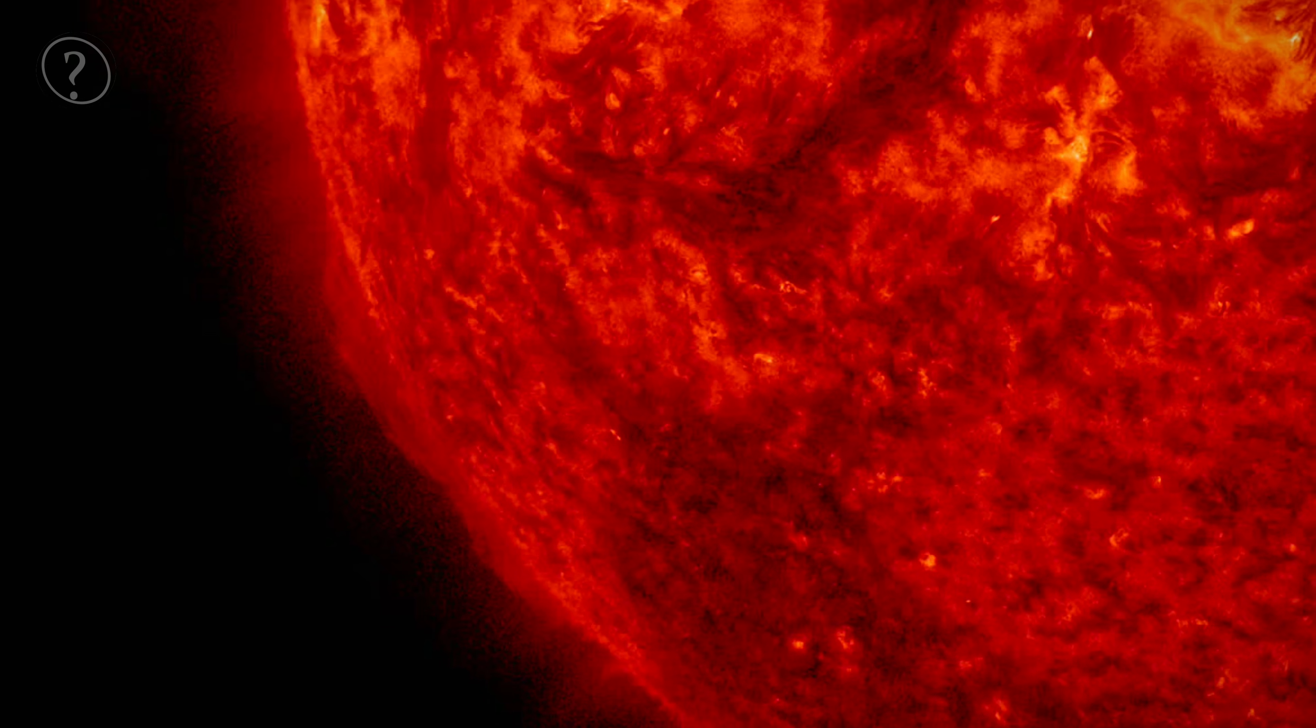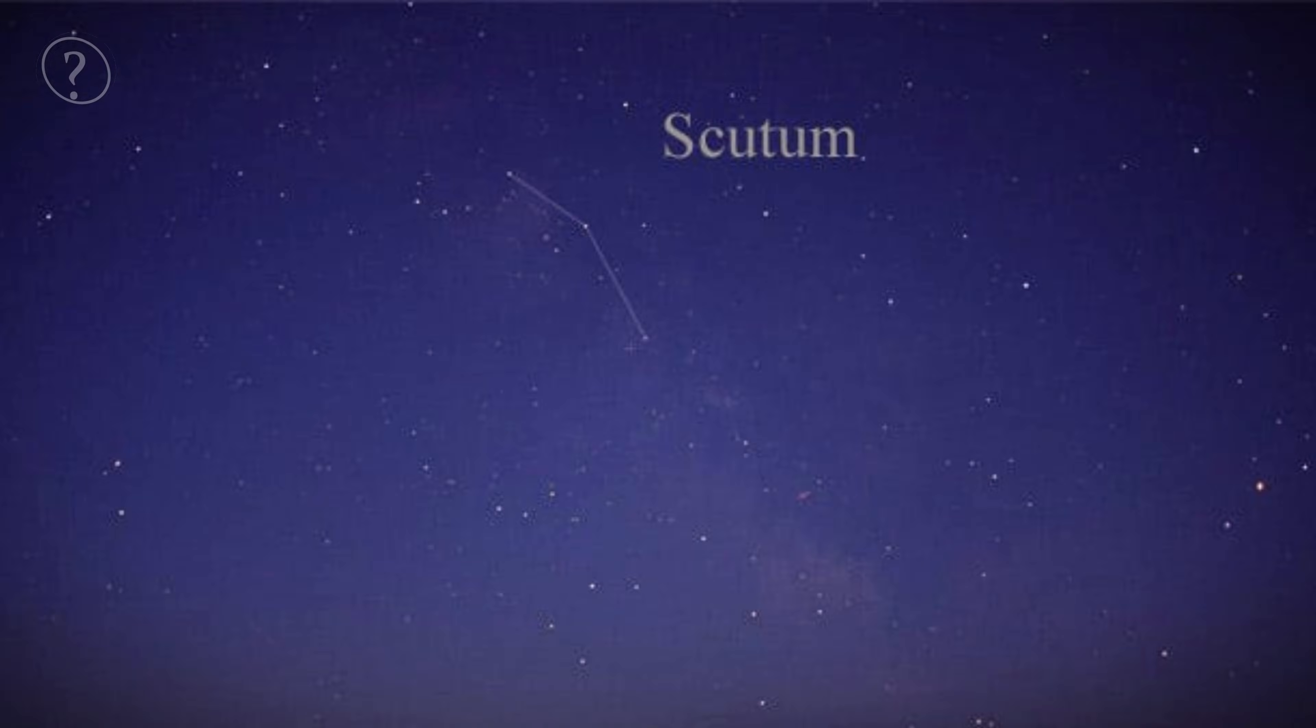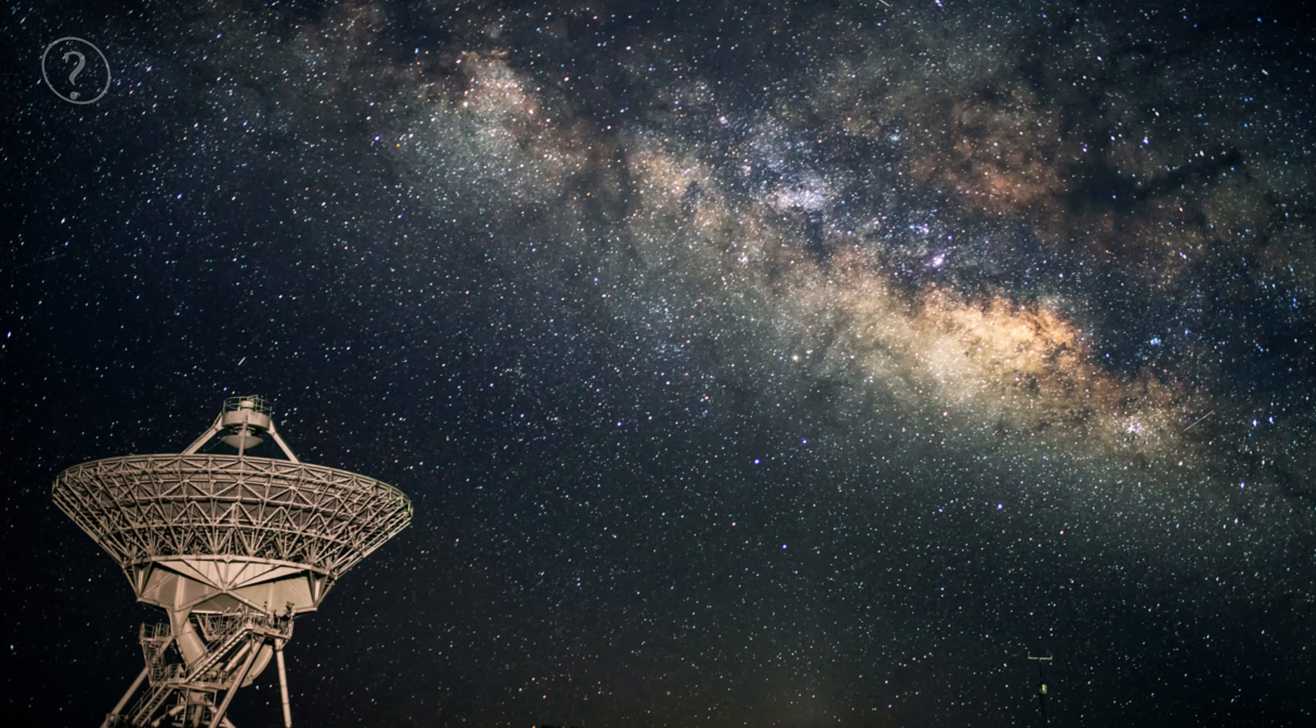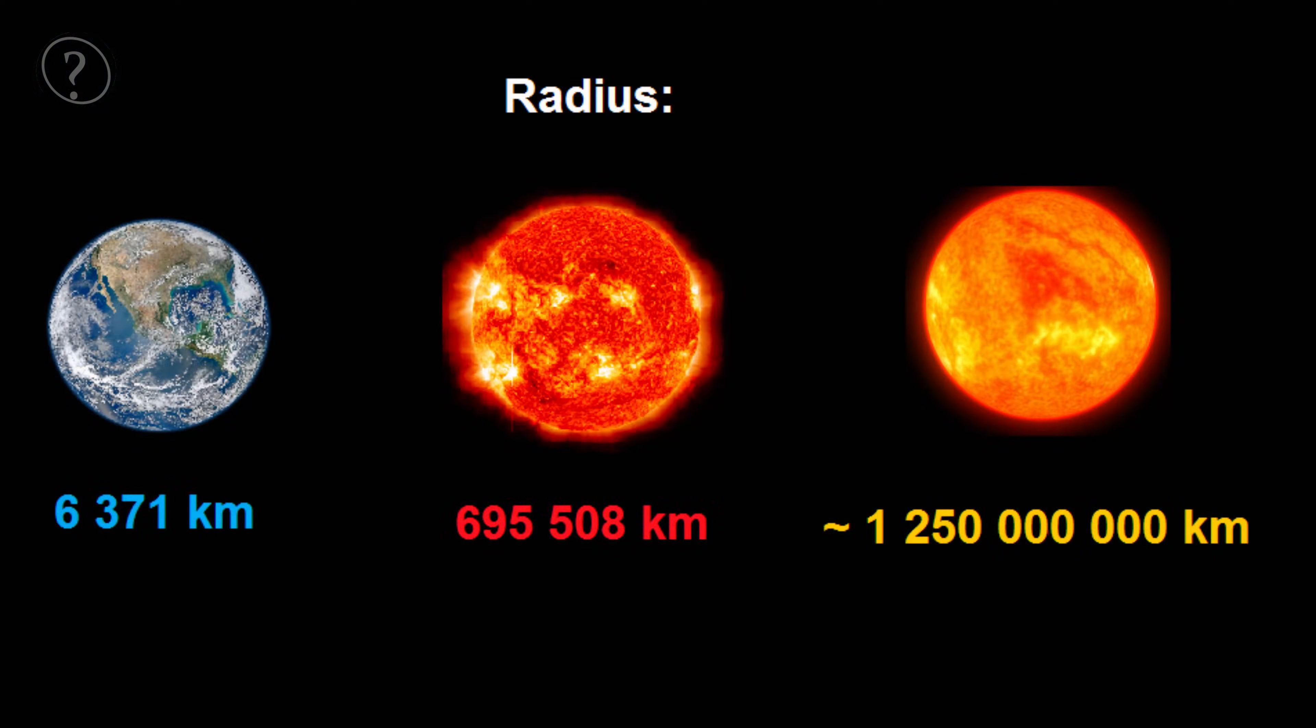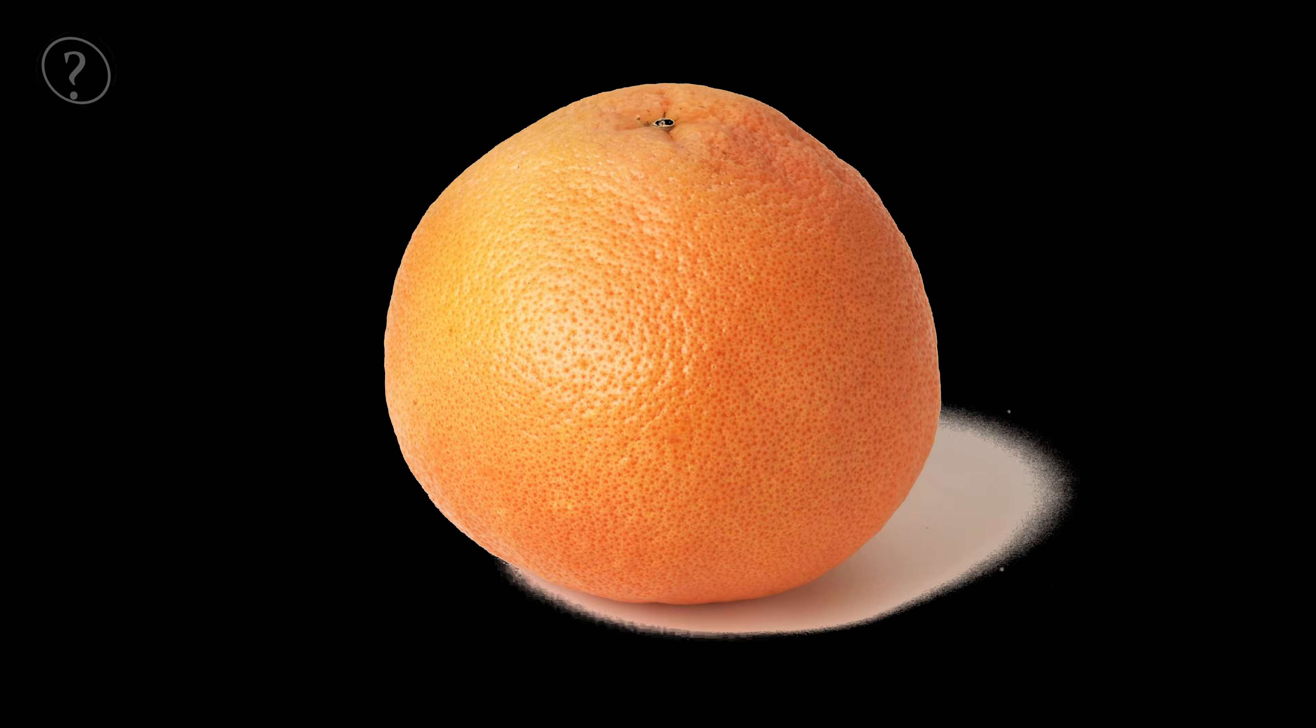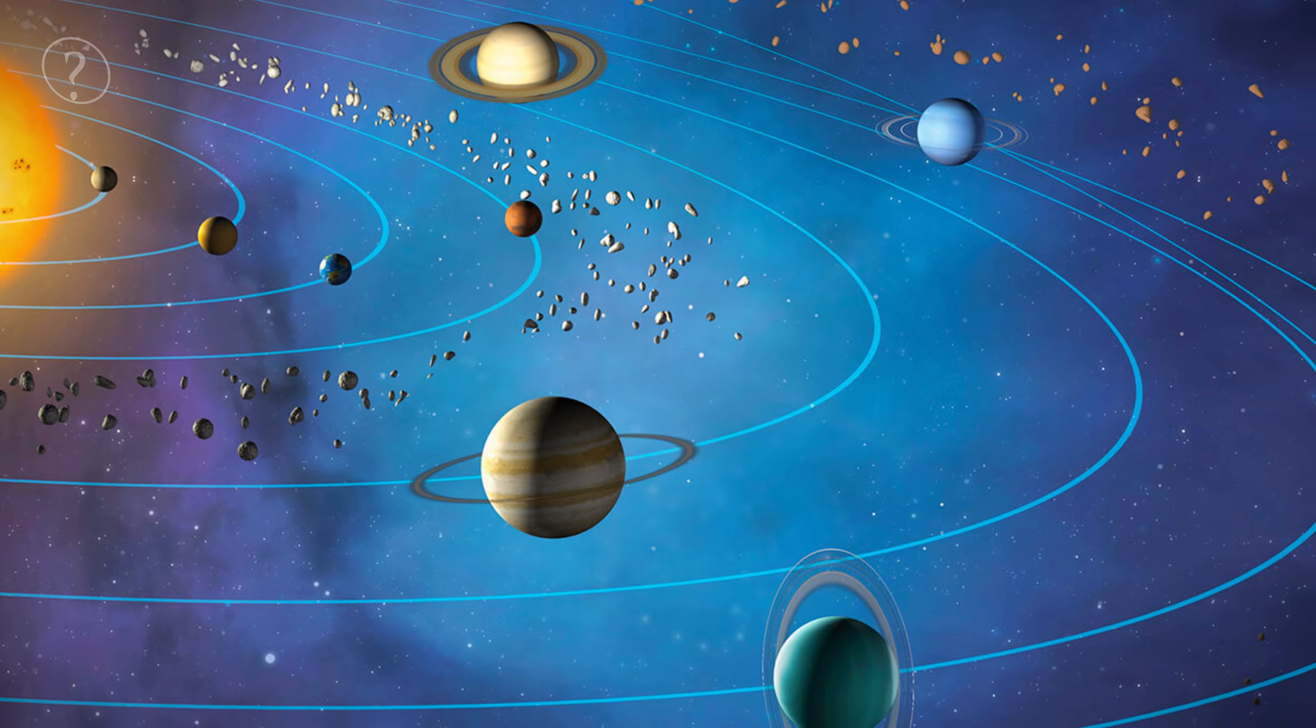UY Scuti is located in the constellation Scutum, a part of our Milky Way galaxy. But it's not just a star, it's a cosmic giant that holds the title of being one of the largest known stars in the universe. Astronomers estimate that UY Scuti is around 1,700 times the diameter of our sun. To put that in perspective, if our sun were the size of a grapefruit, UY Scuti would be bigger than an entire football stadium. Picture that for a moment, a single star that dwarfs everything in our solar system, and then some.